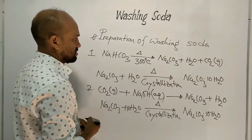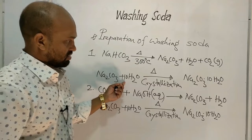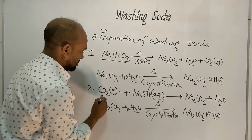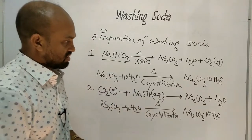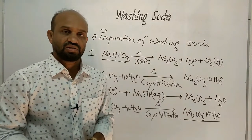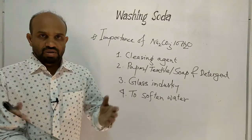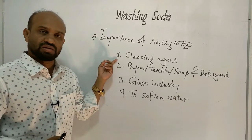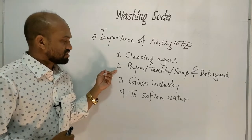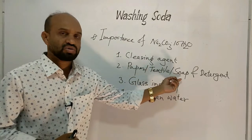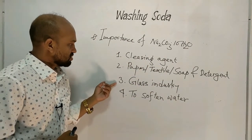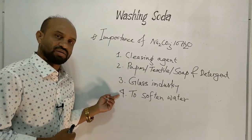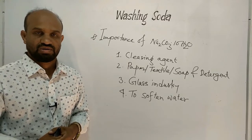Here we can put 10 molecules of water in the equation. In this way, washing soda can be prepared from baking soda and from carbon dioxide with caustic soda. Now let's see the importance of washing soda. Washing soda is used as a cleansing agent in households and industry, and in paper, textile, soap, and detergent industries.